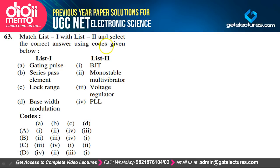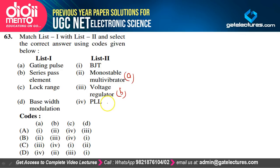Match: Gating pulse → monostable multivibrator (A-2); Series pass element → voltage regulator (B-3); Lock range → phase lock loop (C-1); Base width modulation → BJT (D-4). Option B is correct.